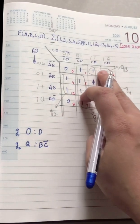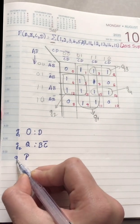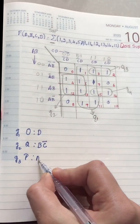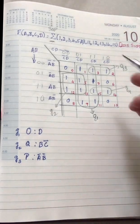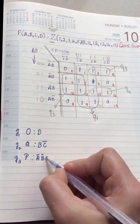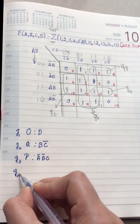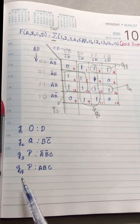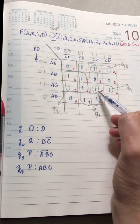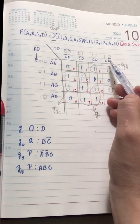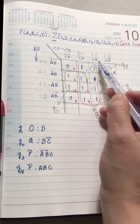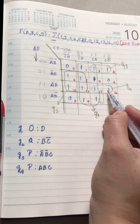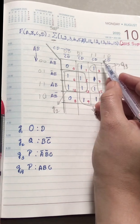For Group 3 (pair): the cells have ā b̄ and the common column term is c, so Group 3 gives ā b̄ c. For Group 4 (pair): the cells share a and b as common row terms, and c is the common column term, so Group 4 gives a b c. Remember, the key is always to identify the common literals across all cells in a group.